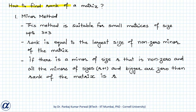Next we look at how to find the rank of a given matrix. There are two commonly used methods. The first is the minor method, which is most suitable for small matrices of size up to 3 by 3. According to the minor method, the rank of a matrix equals the largest size of a non-zero minor of the matrix. That is, if there is a minor of size r that is non-zero and all minors of sizes r+1 and bigger are zero, then the rank of the matrix is r.